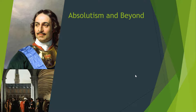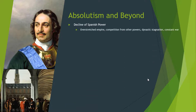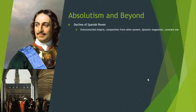France is the model for absolutism, but there are some other political developments to discuss. The decline of Spanish power: Spain has reached its apogee and is declining throughout the 17th century. Factors include the defeat of the Spanish Armada in 1588 at the hands of the English, an overstretched empire that is really difficult and expensive to govern, competition from powers like France and the Dutch on the economic front, coupled with dynastic stagnation and constant warfare. The height of Spanish power is really the 16th century; by the 17th century, the Spanish are getting passed by.